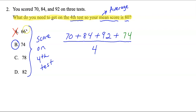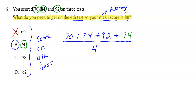In summary, if you score 70 on the first test, 84 on the second test, 92 on the third test, and 74 on the fourth test, your overall average or mean is 80.